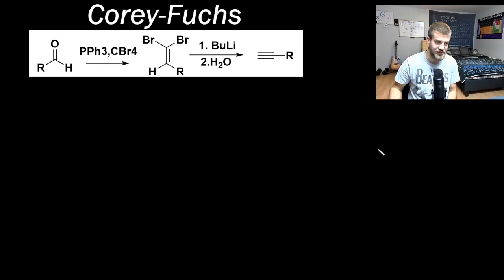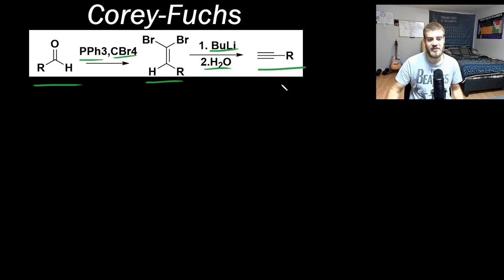In Corey-Fuchs reaction, you start with an aldehyde, to which you add triphenylphosphine and carbon tetrabromide. Then you get this dibromoethylene part that you can isolate, and in another reaction, you add butyl lithium and water in two subsequent steps, and then you can isolate your terminal alkyne.